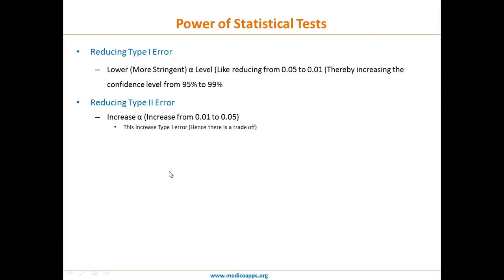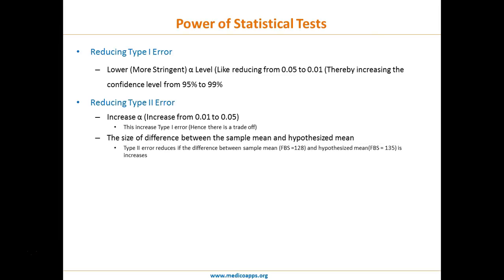Generally in medical science, 0.05 or a 95% confidence interval is taken as the standard, as it is considered a balance between Type 1 and Type 2 error. Another way to reduce Type 2 error is related to the size of the difference between the sample mean and the hypothesized mean — in the previous example, the hypothesized mean was 135 for fasting blood sugar. The greater the difference between the hypothesized mean and the sample mean, the less the Type 2 error.